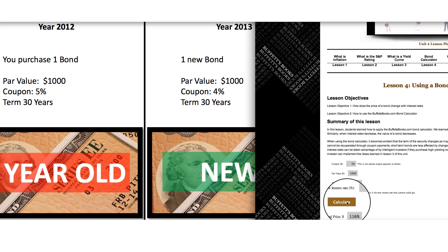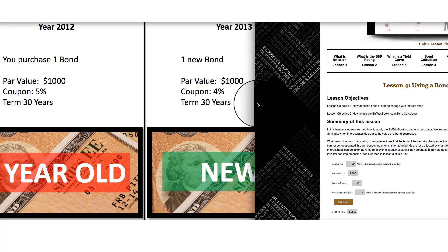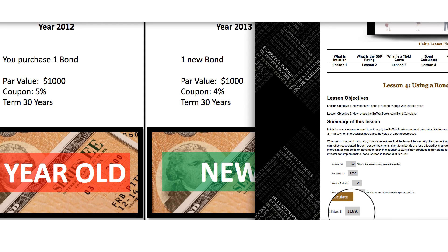The reason it's worth more and you could sell it for a premium is because the best someone can go out and get is 4%. If you add up all the coupon payments for the next 29 years with that 4% bond, the price would equal $1,169 with the 5% bond. That's why you're able to charge a premium for it.